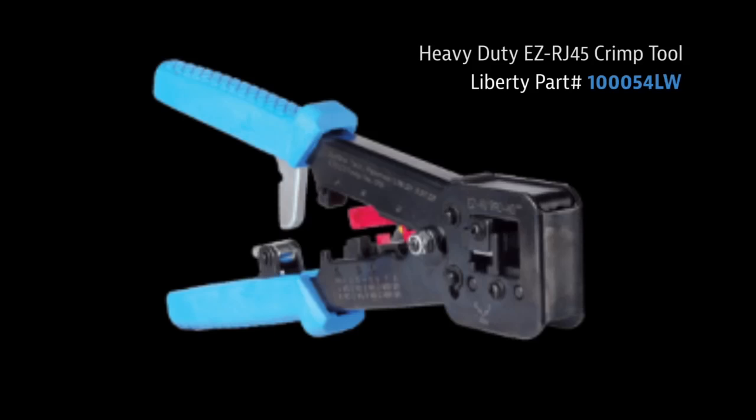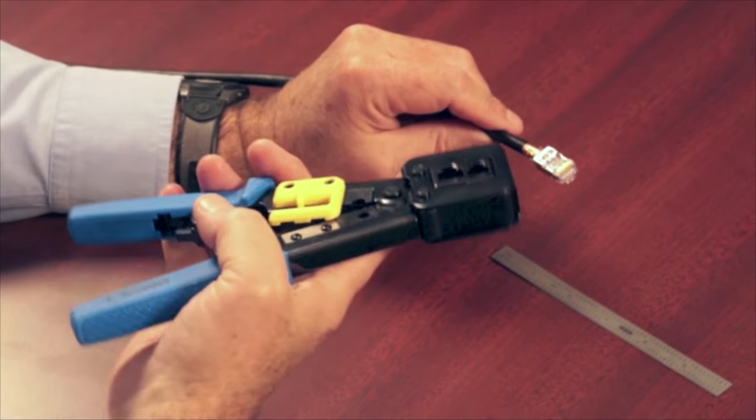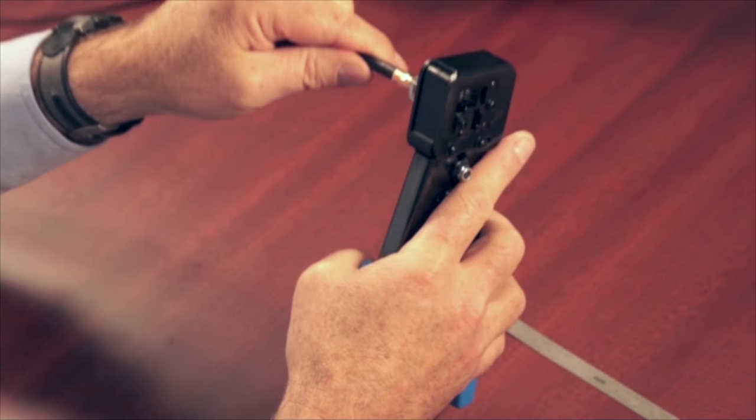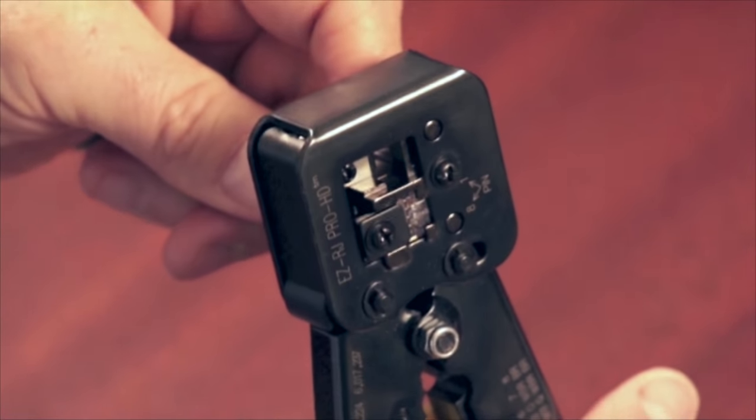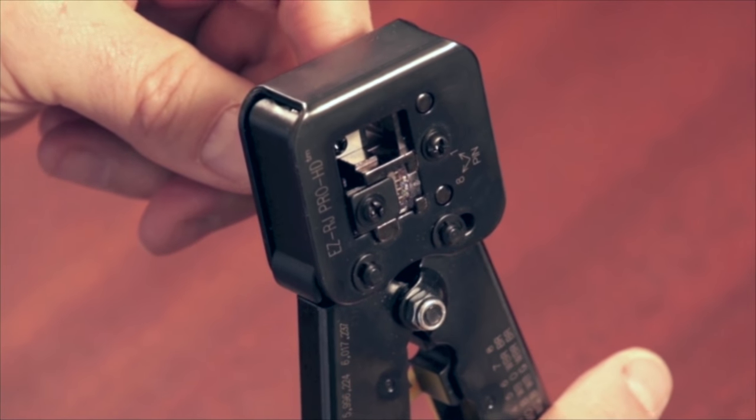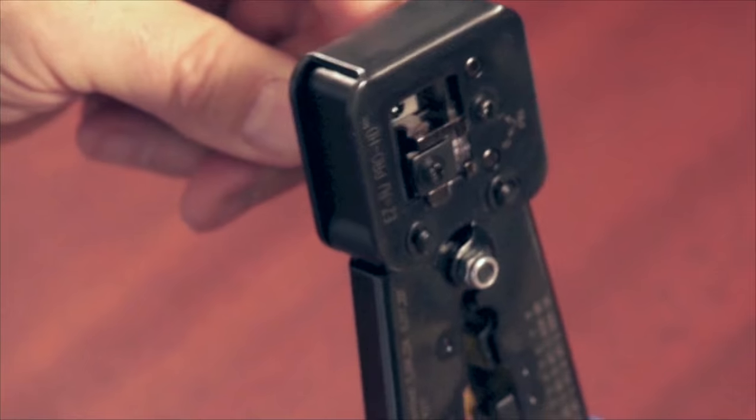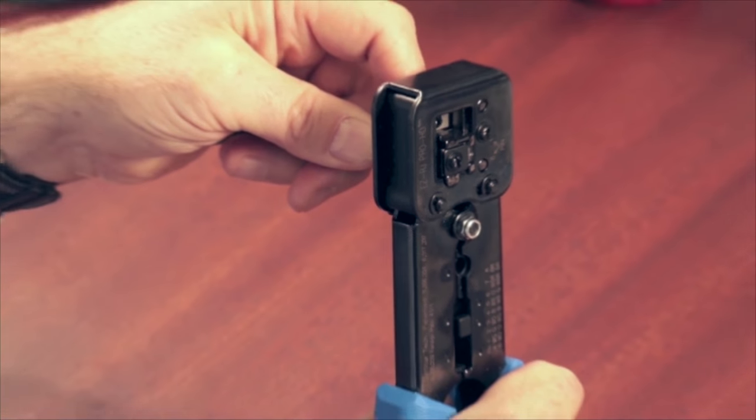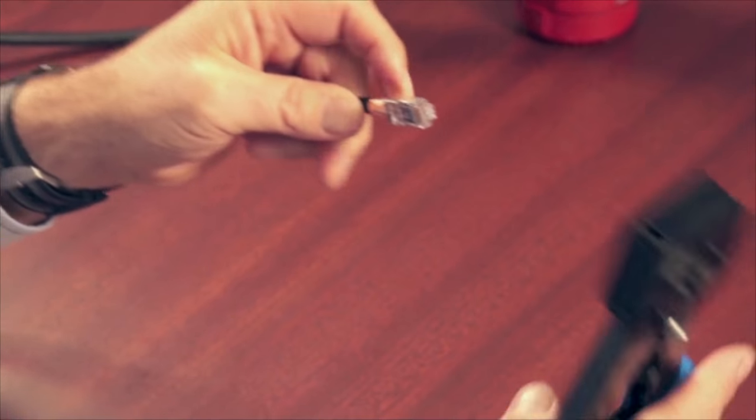Using a heavy duty crimp tool for Category 6 cable, you do not want to use any sort of economy crimp tool. The Liberty Catmaster tool that we sell is perfect for this application. It's made for Category 6 cables and will terminate this connector. Make sure it's fully seated - a lot of damage can happen to connectors and tools if you don't seat it all the way. Squeeze firmly, hold for a second to make sure you get full seat, then release the tool and remove your connector.